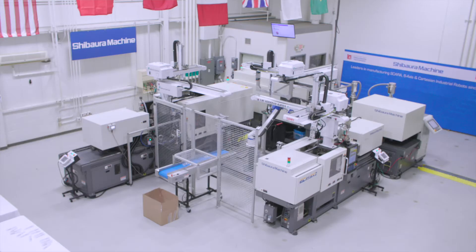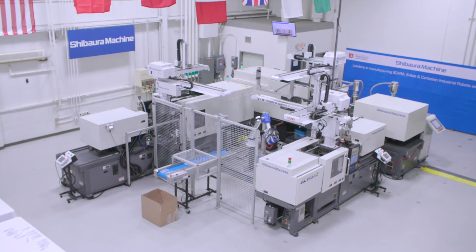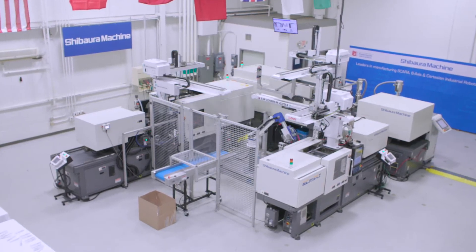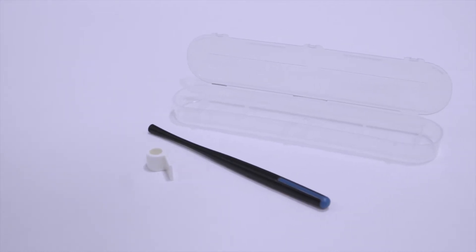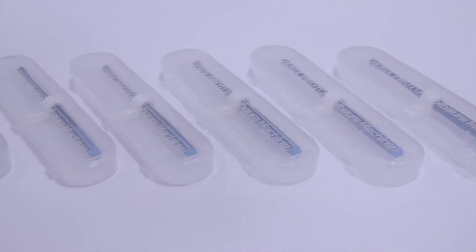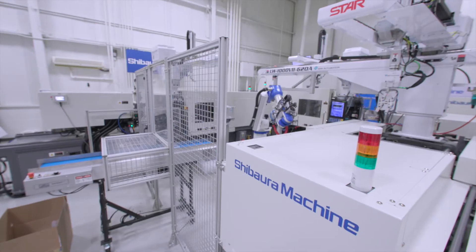Shibaura Machine delivers powerful integrations and a full range of all-electric injection molding machines for your needs. Learn how these systems work together to create a two-material stylus, holder, and assemble them into a case in this Industry 4.0 cell with advanced insight and management.